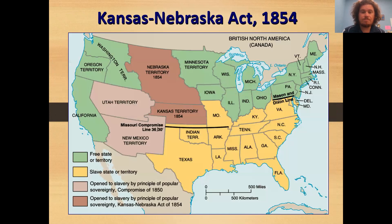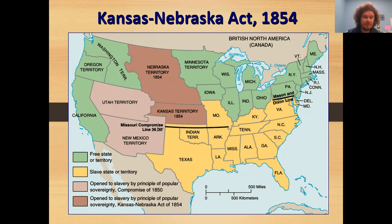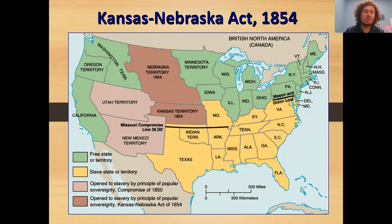Moving on, we have the Kansas-Nebraska Act of 1854. This became a very divisive law. The basic idea was: if we're going to build a railroad all the way out to California, it's going to have to pass through the Kansas and Nebraska territories, so we're going to have to make those into states. By the terms of the old Missouri Compromise, Kansas and Nebraska would be two new free states. So they came up with the Kansas-Nebraska Act — the idea was to allow the people who live in those territories to vote on whether they wanted slavery or not: popular sovereignty. You're deciding what you want for yourself, and it all sounds very democratic.